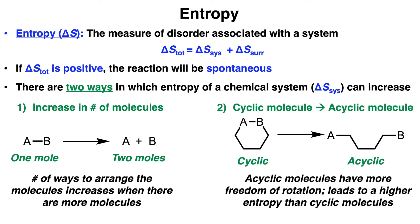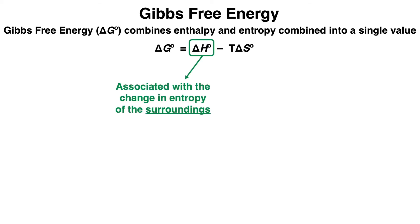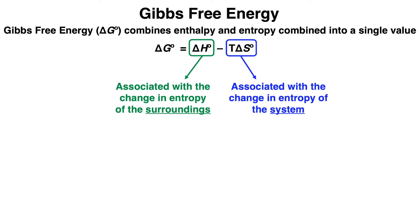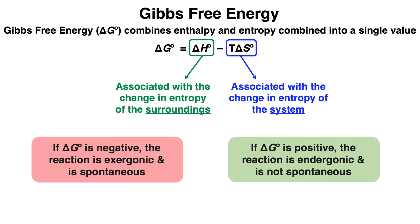Gibbs free energy, or delta G0, combines both enthalpy and entropy into a single value using the equation delta G0 equals delta H0 minus T times delta S0, where enthalpy is associated with the change in entropy of the surroundings, while T delta S0 is associated with the change in entropy of the system. If delta G is negative, the reaction is exergonic and is considered to be spontaneous. But if delta G is positive, then the reaction is endergonic and is not spontaneous.